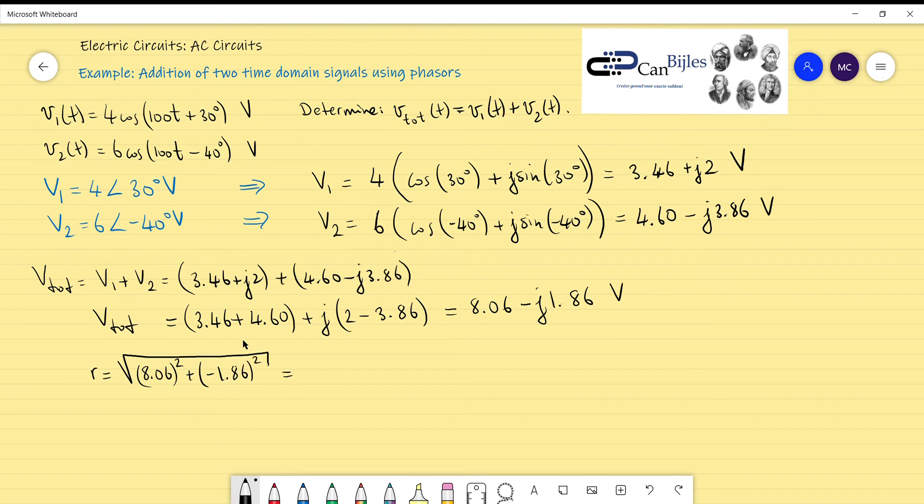The magnitude of this vector is square root of 8.06 squared plus minus 1.86 squared, and that will be approximately 8.27. If you go to the phase you can sketch it out. I will do that here. You can see it is in the fourth quadrant.